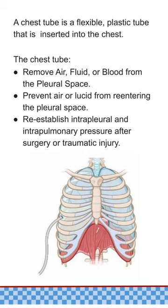Hemothorax is usually due to injury or bleeding from the lungs or chest wall. Pleural effusion is the buildup of excess fluid in the pleural space, which can be caused by infections, heart failure, cancer, or other medical conditions. By inserting a chest tube and connecting it to a drainage system, healthcare providers can effectively remove the unwanted substances from the pleural space, allowing the lung to re-expand and function properly. This helps to relieve symptoms, improve breathing, and prevent further complications.